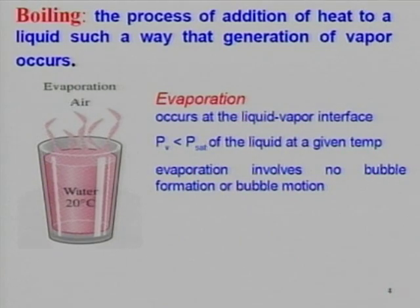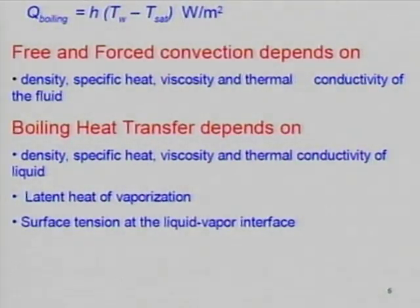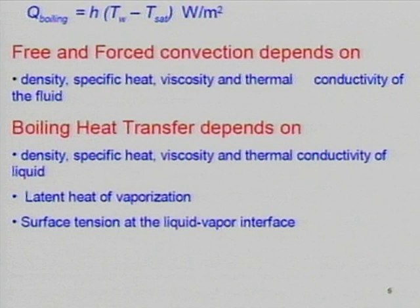Boiling is the addition of heat such that generation of vapor occurs; evaporation occurs at the liquid-vapor interface. Evaporation is a surface phenomenon; boiling is a bulk phenomenon. The basic relationship is q equals h times (T_wall minus T_sat). In boiling, the heat transfer coefficient depends not just on Reynolds number and Prandtl number but critically on latent heat of vaporization and surface tension. Surface tension is a very important variable in boiling, condensation, and two-phase flows in general.